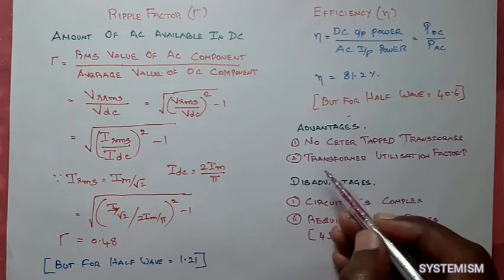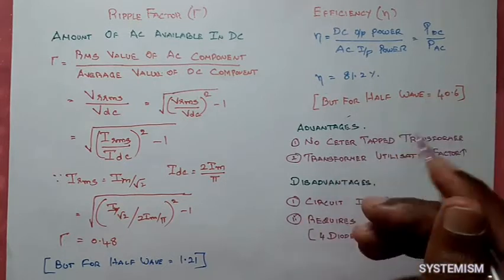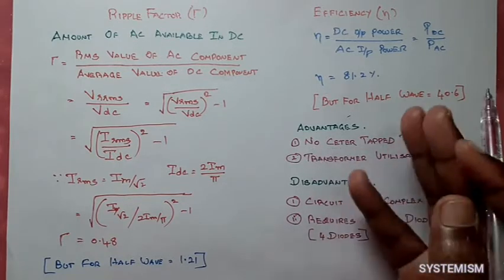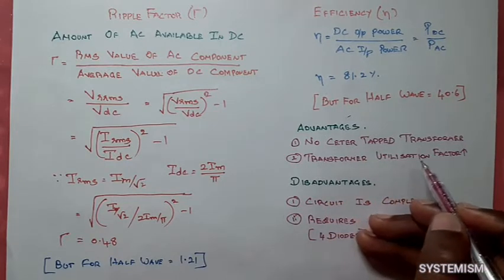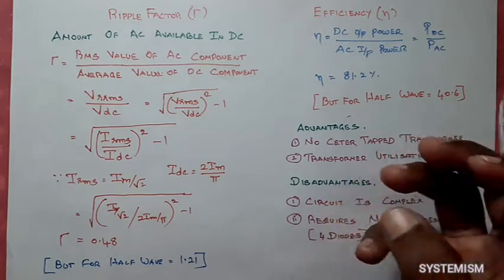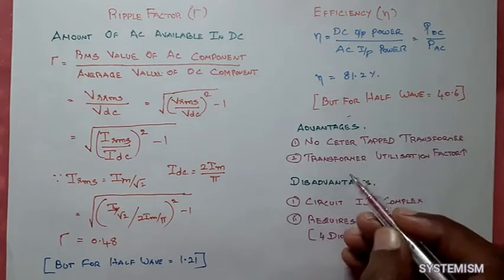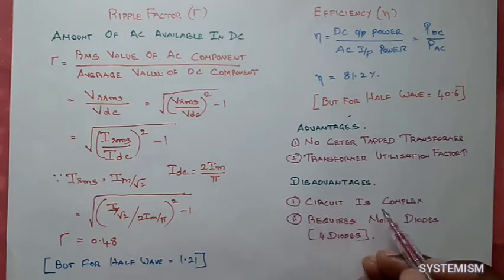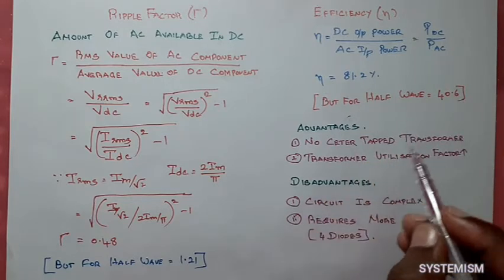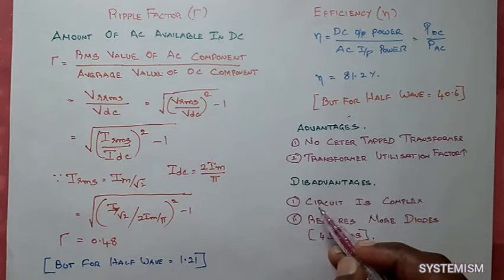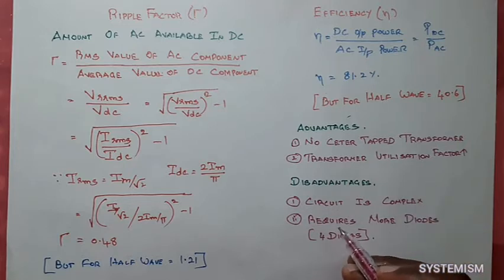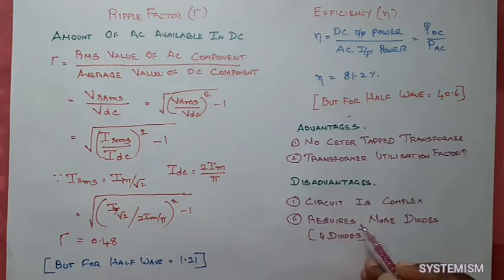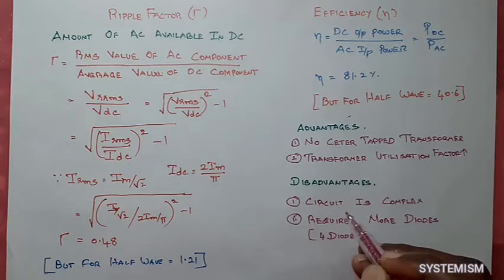What are all the advantages and disadvantages of this bridge rectifier with respect to full wave rectifier? In normal full wave rectifier, we have center tap transformer. But the advantage of bridge rectifier is no center tap transformer. The transformer utilization factor is also very large in bridge rectifier, so the transformer is utilized more. What are the disadvantages? The circuit is complex — bridge rectifier is somewhat difficult to draw compared to normal full wave rectifier. It also requires more diodes: in full wave rectifier only two diodes, but in bridge rectifier we need four diodes. These are the disadvantages of your bridge rectifier.